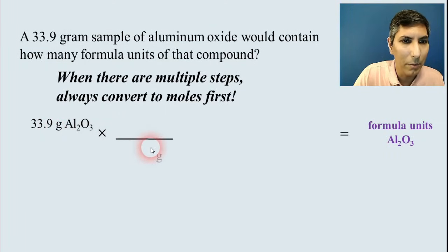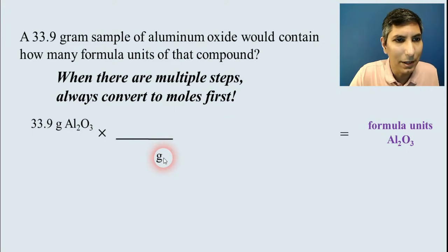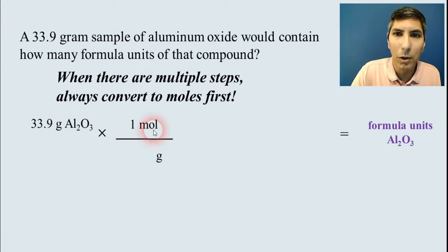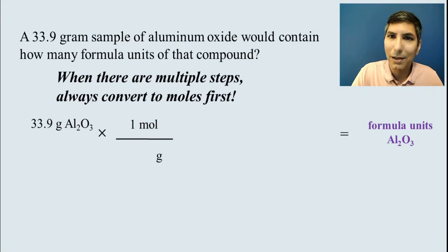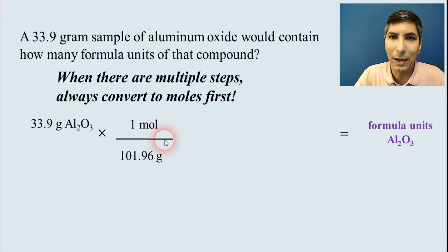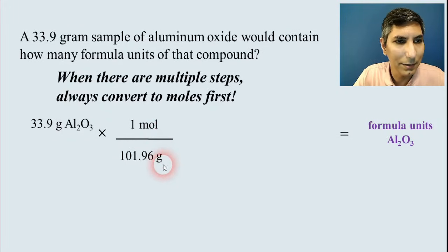So convert to moles first. And we're going to have formula units down here at the end, but we're converting to moles first. That means grams have to go on the bottom, because that's what we're trying to get rid of. And one mole on top. How many grams are in one mole of aluminum oxide? We figured that out in an earlier slide. We saw it was 101.96 grams.